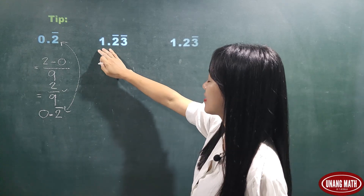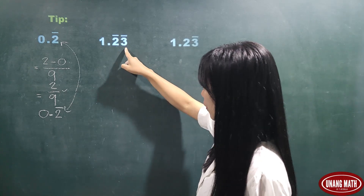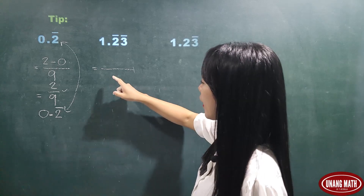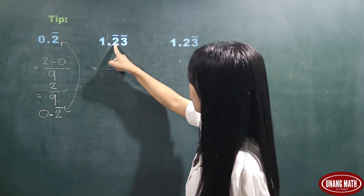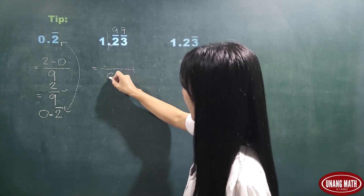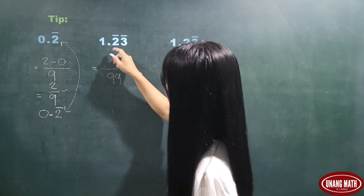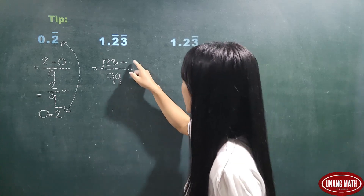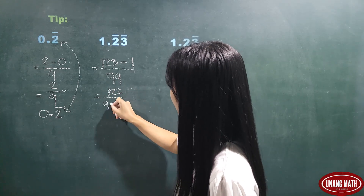Now let's look at the next repeating decimal: 1.23 repeating, where digits 2 and 3 are both repeating. For the denominator, consider the digits to the right of the decimal point. Since 2 is repeating, represent it as 9; since 3 is also repeating, represent it as 9. So the denominator is 99. For the numerator, take all digits — 123 — and subtract the non-repeating digit. Since 1 is non-repeating, subtract 1: 123 minus 1 equals 122. Our fraction is 122 over 99.